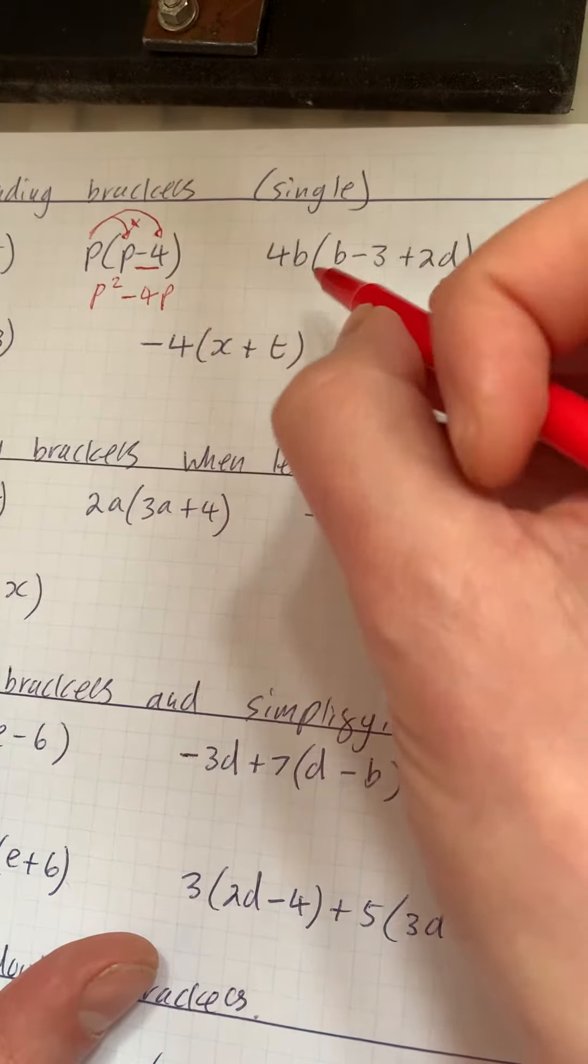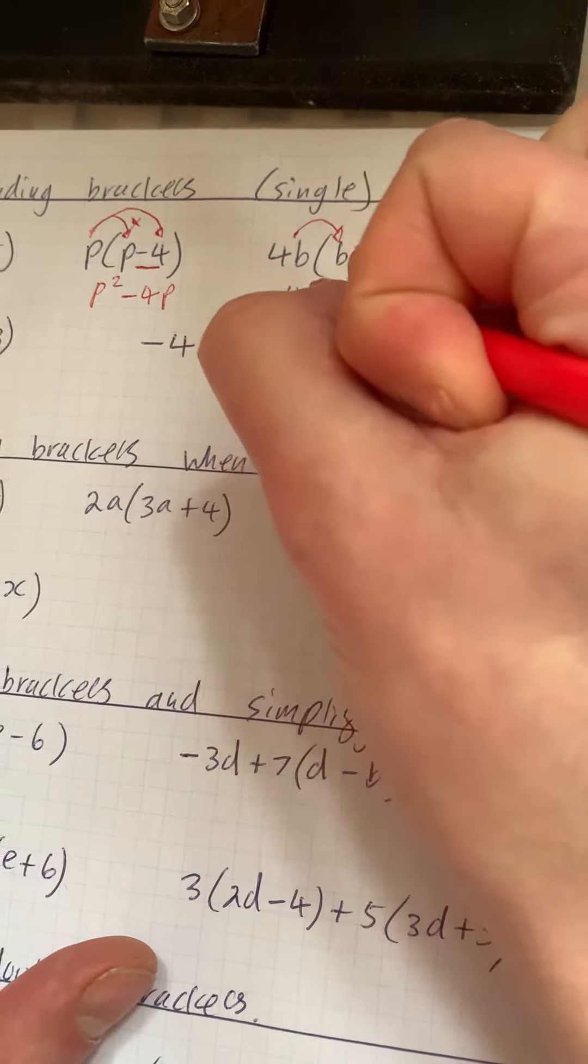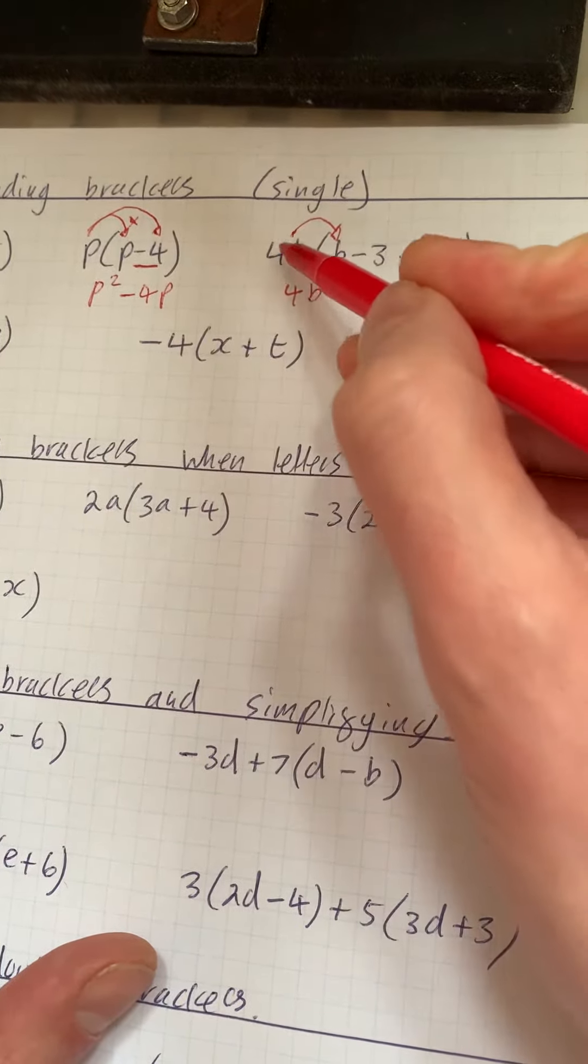Okay, next one, we have got 4b times b, which is 4b squared, because we do b times b, which is b squared, and we've also got that 4.